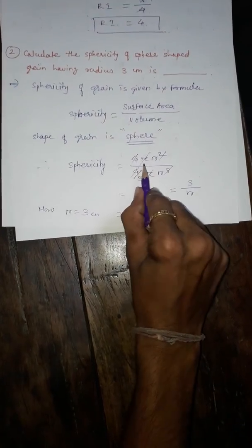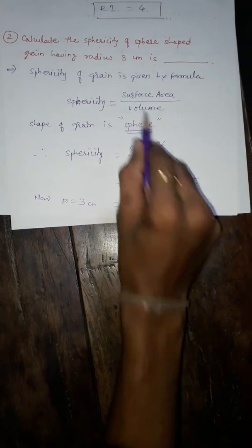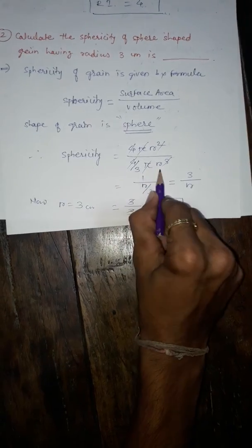Surface area of sphere is given by 4πr² and volume of sphere is given by 4/3 πr³.